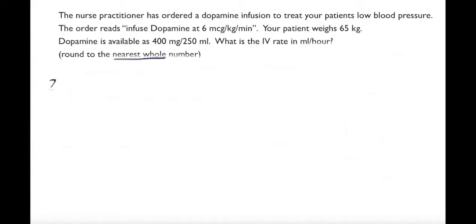So let's look how this would be put together using dimensional analysis from the beginning. I have a 65 kilogram patient and I need six mics per kilo per minute. This is my conversion into my desired dose.